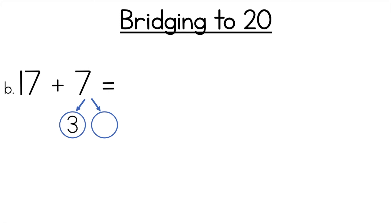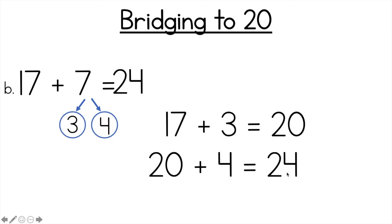Next one. 17 plus 7. So I already put the 3 there for you to make the friend of 20. So 3 plus what equals 7. 3 plus 4 equals 7. So you needed to write it 17 plus 3 is 20 because we want to make 20. 20 is an easy number and then that one's done. So now we have the 4. 20 plus 4 is 24. So if you got 24 and you've written it out like that you can give yourself a big tick.